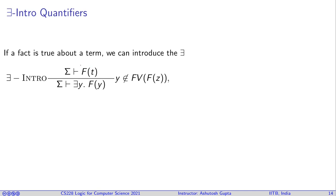If you have F(t) available to you, then you know that F is true on some term. Then what you can do is say that there exists y F(y). Only restriction here is y should not be a free variable in this formula F(z). What is z then? Z is a fresh variable which you use to identify a placeholder where the t is going to leave and the y is going to come.